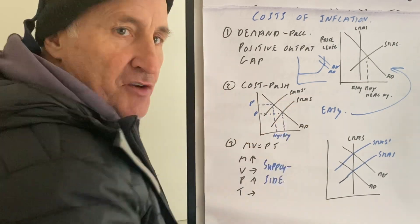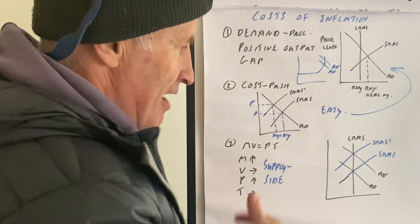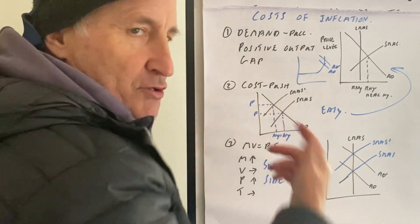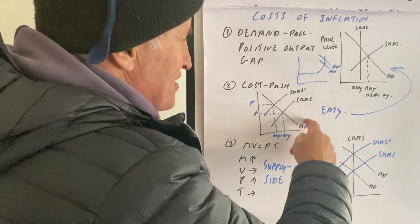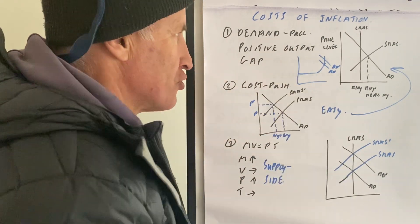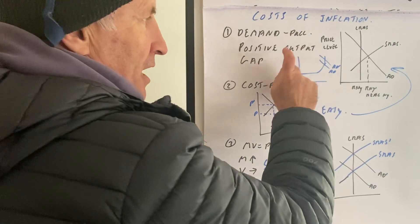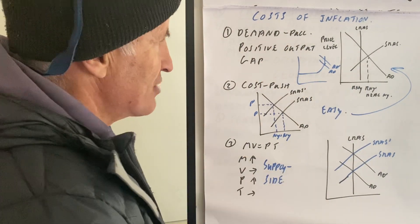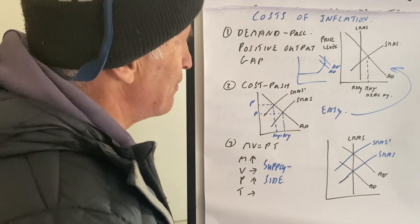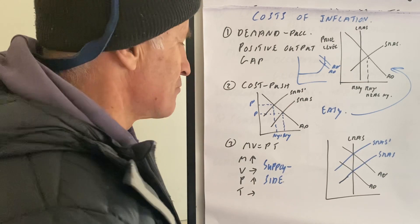Cost-push inflation — use your diagram again, easy to explain: a rise in oil and gas prices, therefore cost-push inflation. Demand-pull inflation is obviously caused by interest rates being too low or the government spending too much money.